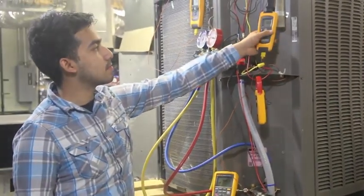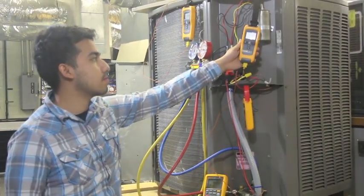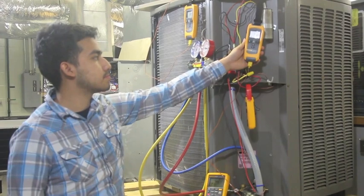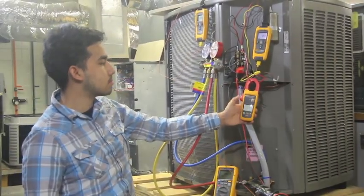Our next meter is a superheat meter. We are measuring superheat at the condensing unit, and we have an amp meter measuring current.